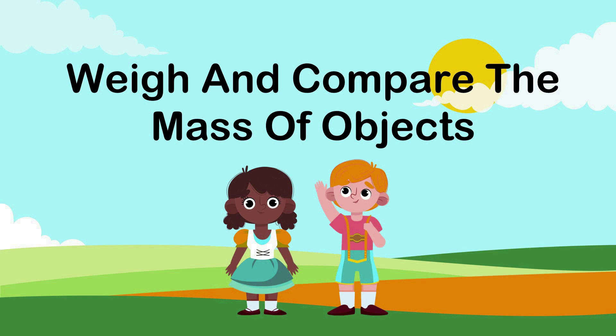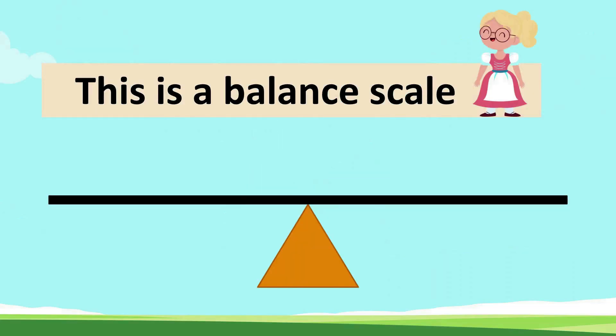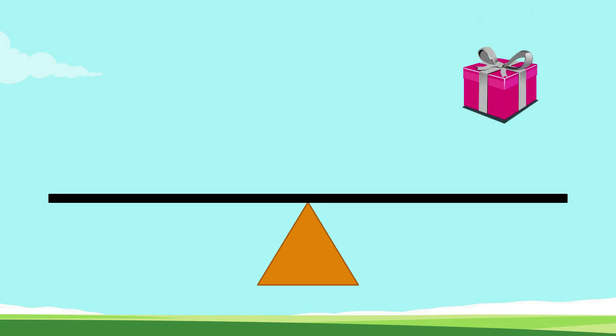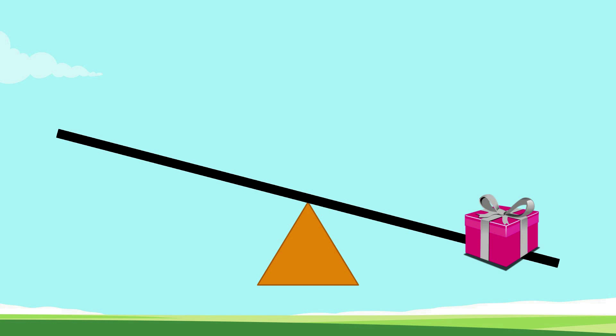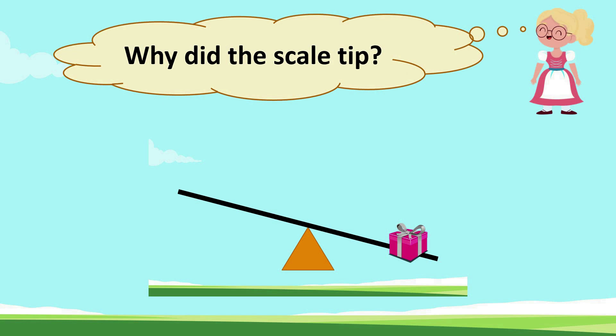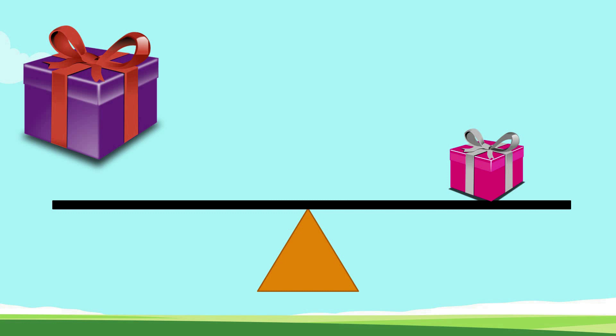Let's weigh and compare the mass of objects. This is a balanced scale — it helps us to measure weight. What do you think will happen if you place a box on a balanced scale? Oh, look what happened to the scale! The scale tipped. Why did the scale tip? The box has mass — it makes the scale tip.